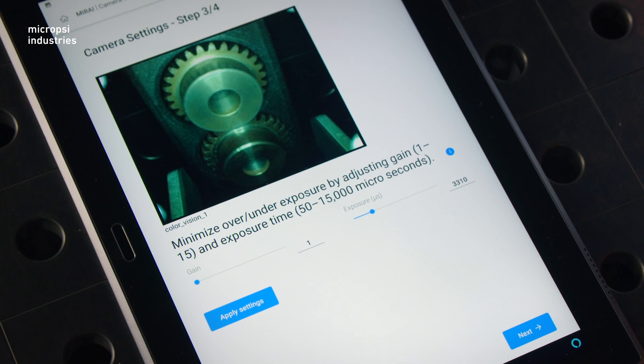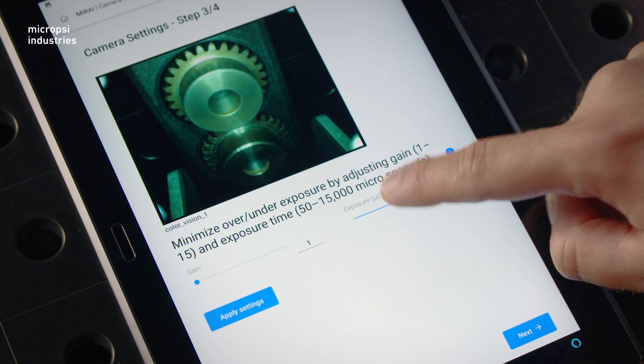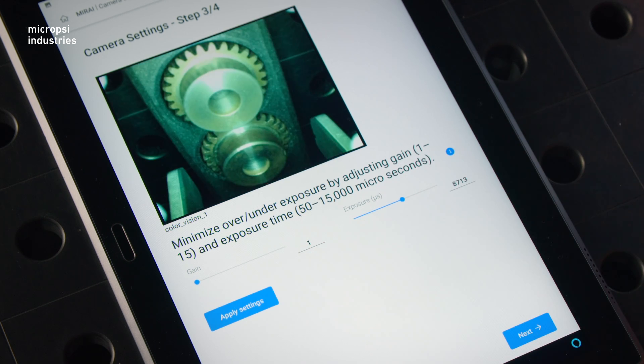A third setting is exposure time. You adjust exposure time here on the tablet. This refers to how long in microseconds the camera shutter is open per frame. If you leave the shutter open longer, the camera receives more light. You can therefore make the image brighter by increasing the exposure time.